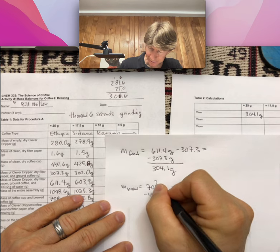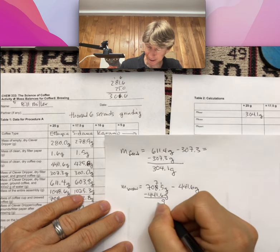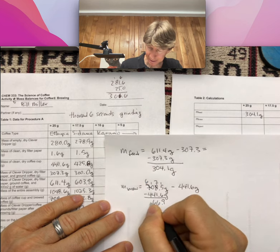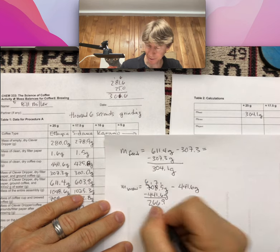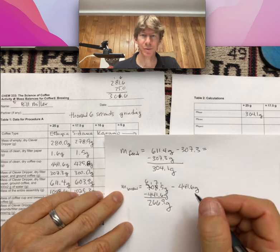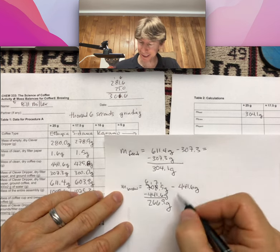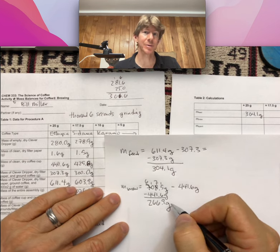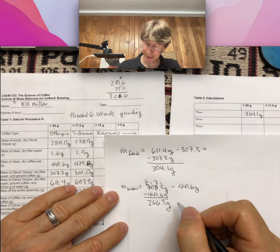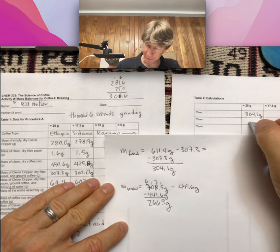I get 266.9. So the mass of my brew, which makes sense, is less than the mass of the water that I started with because some of the water got stuck in the coffee grounds in the clever dripper.